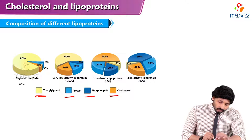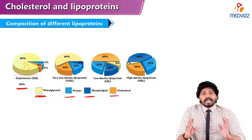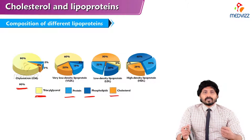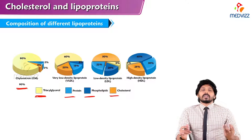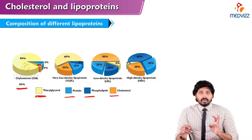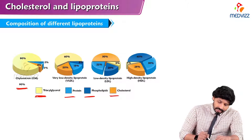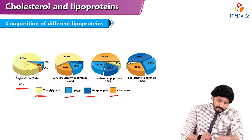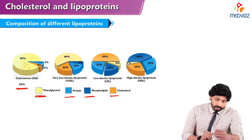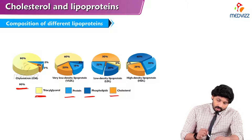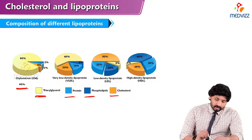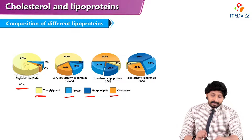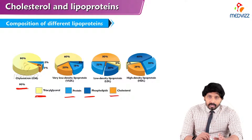When you see the composition of chylomicron, 90% is made up of triglycerides, 2% phospholipids, 3% protein (it is made up of ApoB48 protein), and 5% cholesterol. Chylomicron carries exogenous triglycerides from the intestine to the liver via portal circulation. For very low density lipoprotein: 20% cholesterol, 60% triglycerides, 15% protein, and 5% phospholipids.